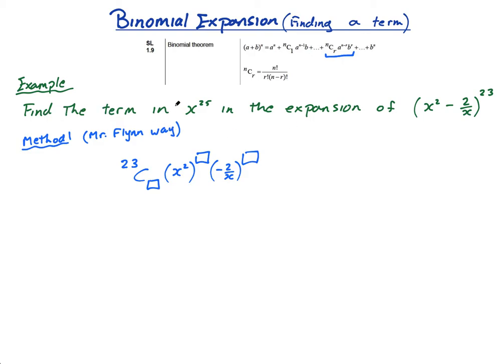It says find the term in x^25. This is hard for a number of reasons. One, I've picked large numbers like 25 and 23. Two, I've put a negative in there. And three, I have an x above the line and below the line, and this is x^2.